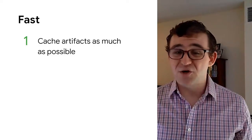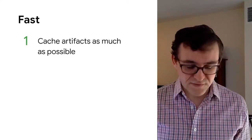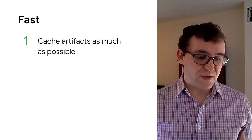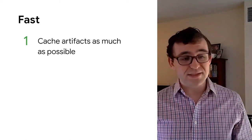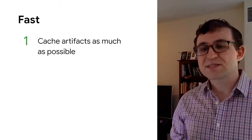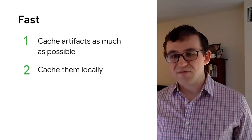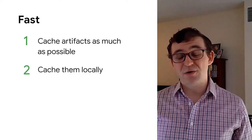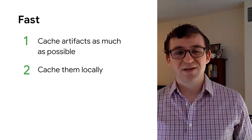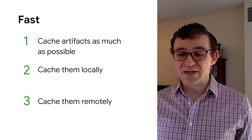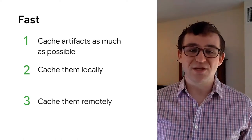So how do we get to fast? First off, we want to cache artifacts as much as possible. When you compile a source file, you want to take the outputs and save them, so when you go to compile the same exact source file again, you can skip doing the work because you already know what the output is going to be. You want to cache those artifacts locally for the benefit of your future self, and also remotely for the benefit of your teammates or build machines that you may have running.